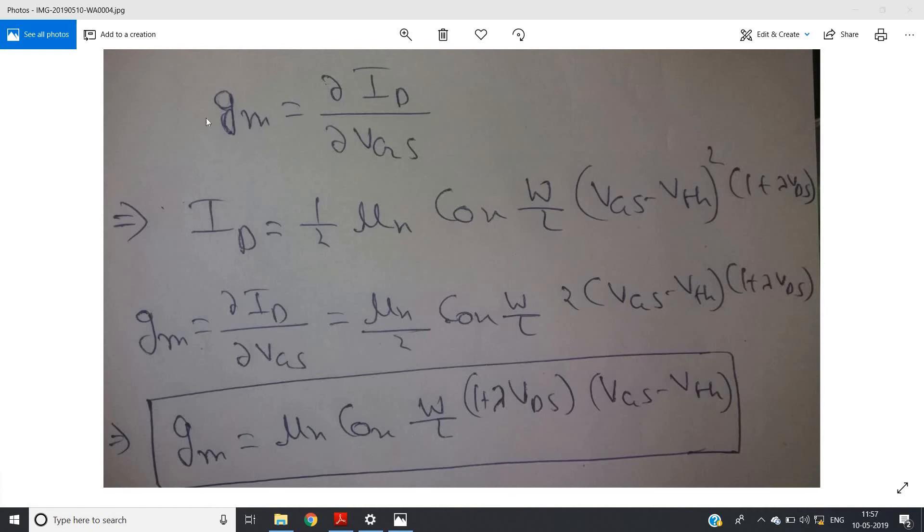That is determined by this parameter, because MOSFET is a voltage controlled current source. So what is the response of a MOSFET, how quickly it can respond, that can be determined by gm.